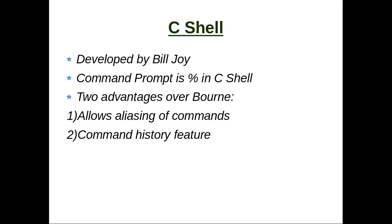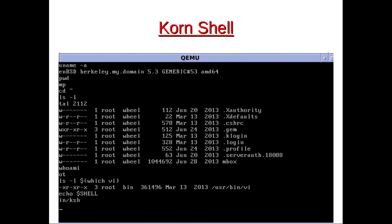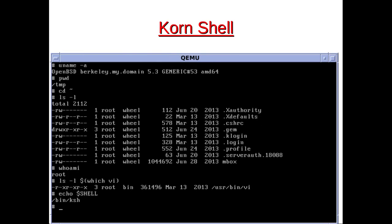Instead of typing the entire command, you can simply use the short alias at the command line. The second benefit of C shell is the command history feature: previously typed commands can be recalled since the C shell keeps track of all commands issued at the command line. This is similar to the DOS key feature in MS-DOS or Windows. You simply press the up arrow key to retrieve previous commands and save time.